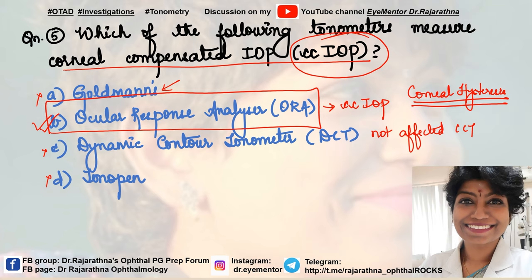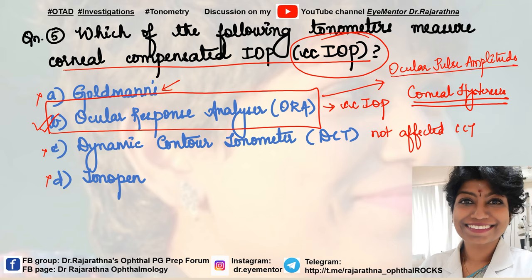The answer is ORA — it gives us corneal compensated IOP. ORA also helps us evaluate the ocular pulse amplitude (OPA), which is an evaluation of ocular blood flow and gives us an idea about ocular blood flow.